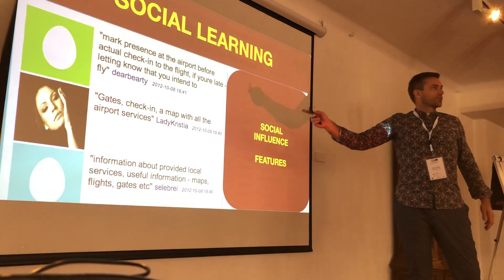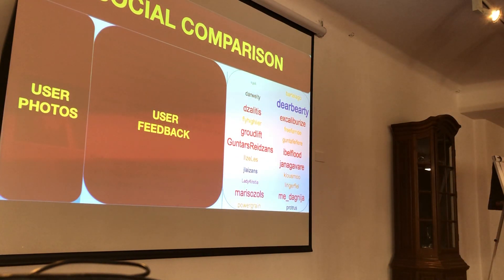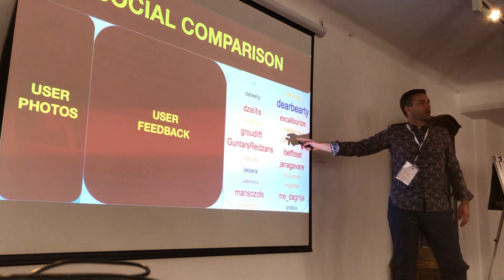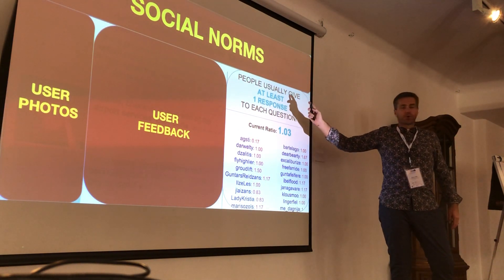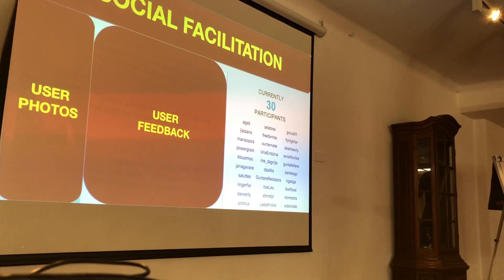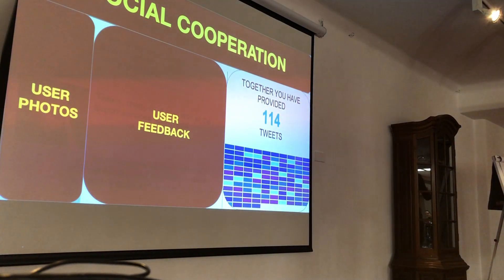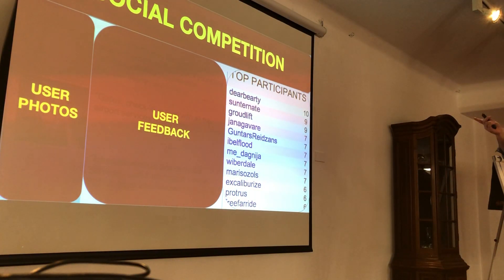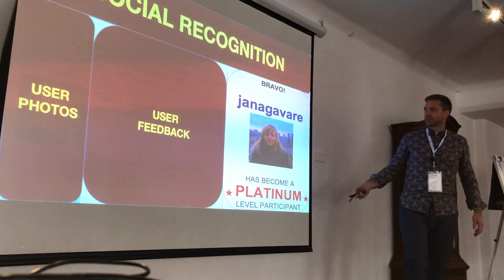Social learning: we used the space so that people would learn from other tweets. Social comparison: based on how many tweets you provided, your username grew in size and also changed color. Social norms: we defined a norm — usually respond one tweet — and this was the aggregate of actual behaviors. Facilitation: how many people are actively using the system and responding. Cooperation: every tweet was a brick in the wall, and you could build towers — you cooperate. Competition: very basic ranking. Social recognition: users who provide more tweets were recognized with special titles and images.